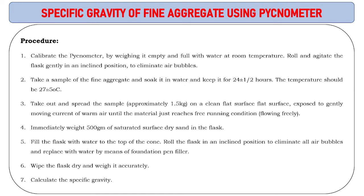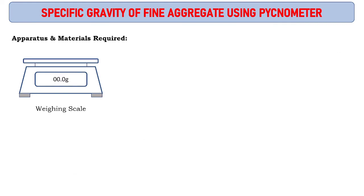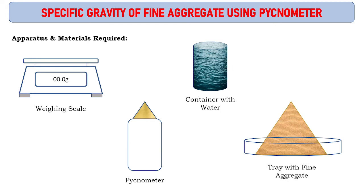Calculate the specific gravity. Now let's see the apparatus required: weighing scale, pycnometer, container with water, and tray with fine aggregate. These are the materials required.